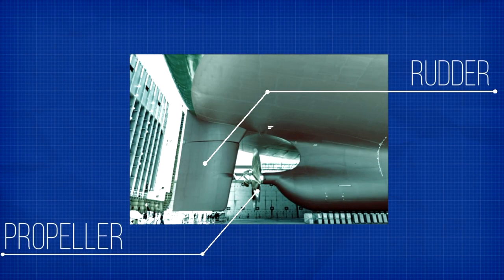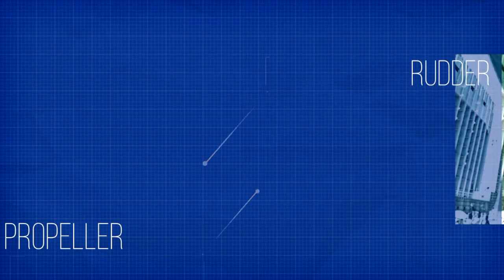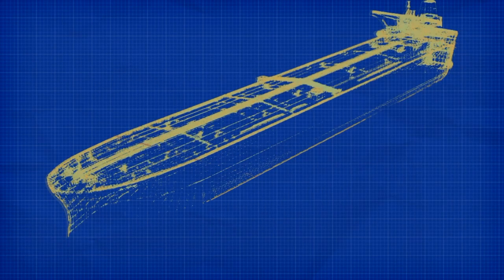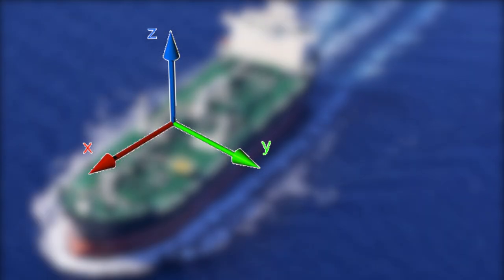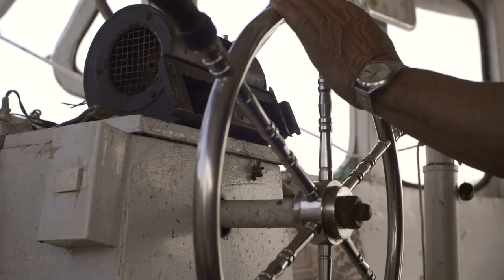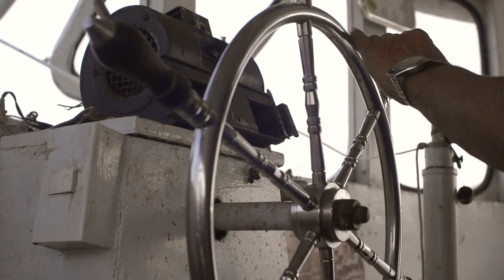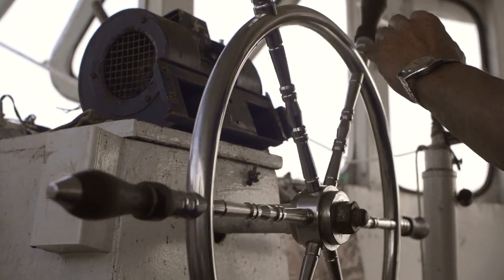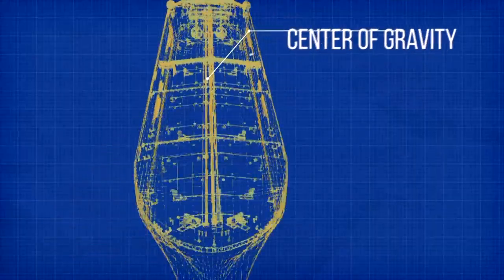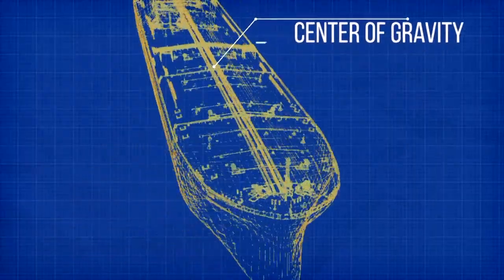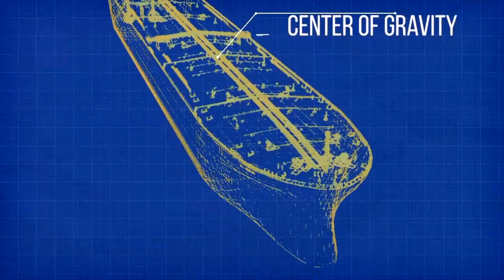As we know, the propeller and rudder enable the ship to move in a three-dimensional space. In other words, the captain alters the ship's orientation around its own center of gravity, giving it the necessary movements.